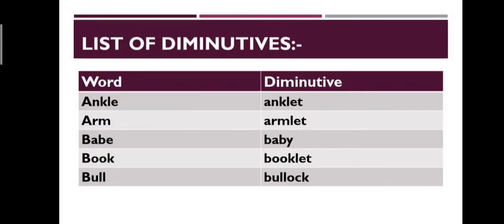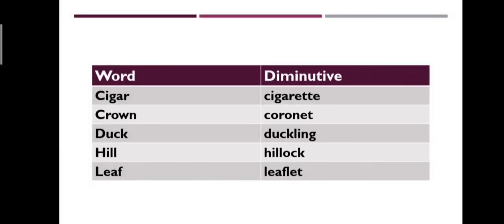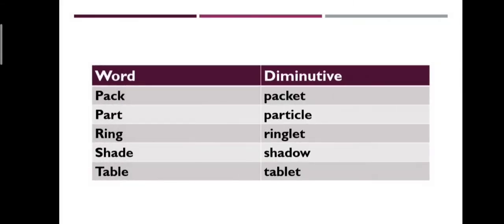Here is a list of diminutives: ankle – anklet, arm – armlet, babe – baby, book – booklet, bull – bullock, cigar – cigarette, crown – coronet, duck – duckling, hill – hillock, leaf – leaflet, pack – packet, part – particle, ring – ringlet.